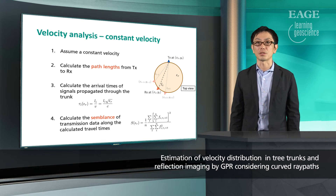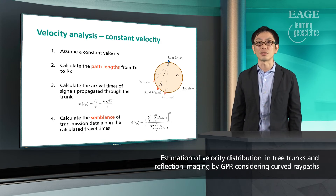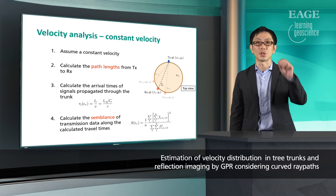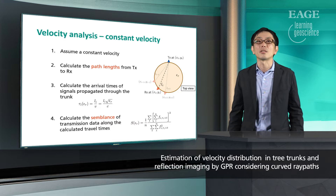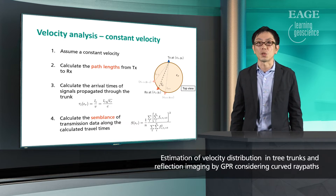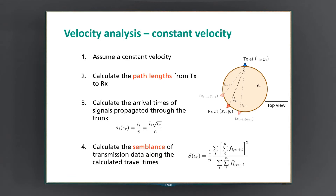To estimate velocity of tree trunk as a constant value, we calculate the distance from transmitting position to receiving position with a straight line, and then calculate travel times of transmission signals with the constant velocity. We can calculate these for various receiving positions, and also for various velocities, just like the velocity analysis for CMP data. We can then evaluate which velocity or permittivity best explains the data by calculating semblance.